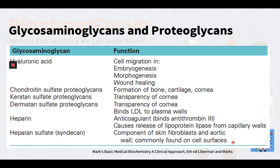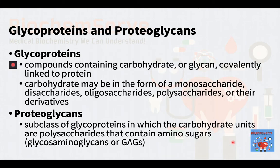This table lists some important specific functions of the glycosaminoglycans and proteoglycans. Are glycoproteins and proteoglycans the same? Let us try to differentiate. Glycoproteins are compounds containing carbohydrate, or glycan, covalently linked to protein. The carbohydrate may be in the form of monosaccharides, disaccharides, oligosaccharides, polysaccharides, or their derivatives — for example, sulfo- or phospho-substituted sugars. One, a few, or many carbohydrate units may be present.